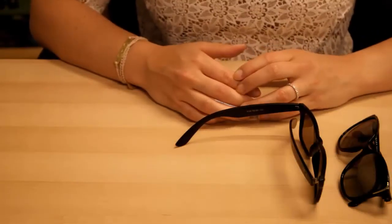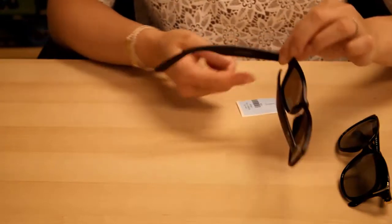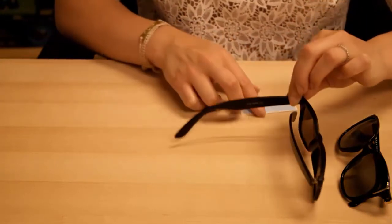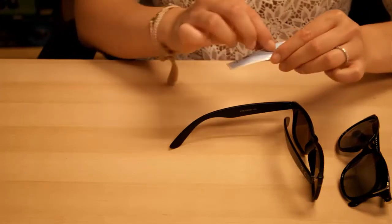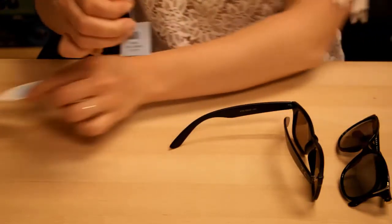The second method we will show you today is how to attach labels to frames with a larger temple width, like this one here. Take your label, pinch and grab the loop end, and pull it off of the paper backing.